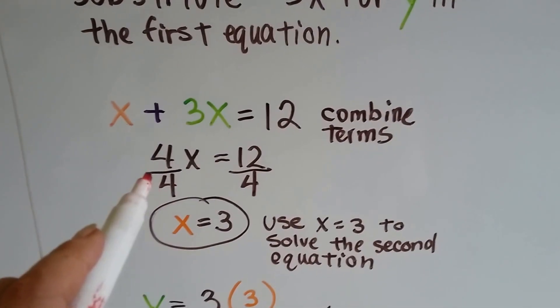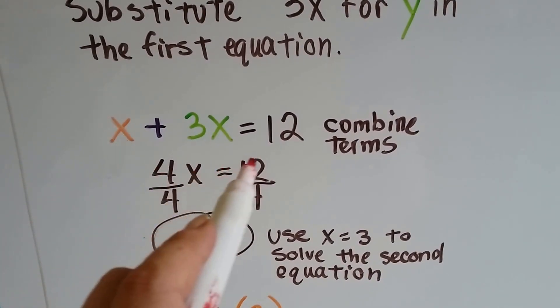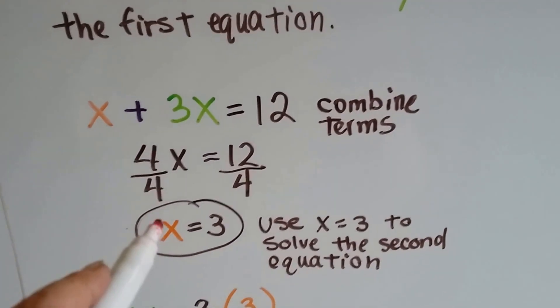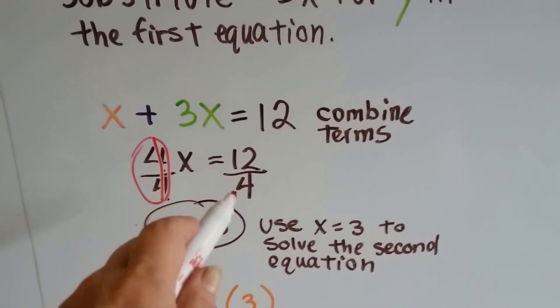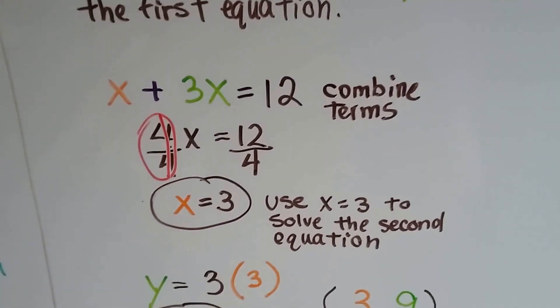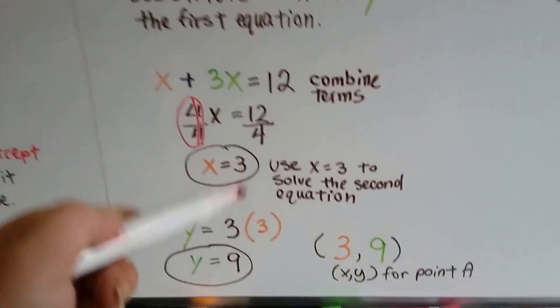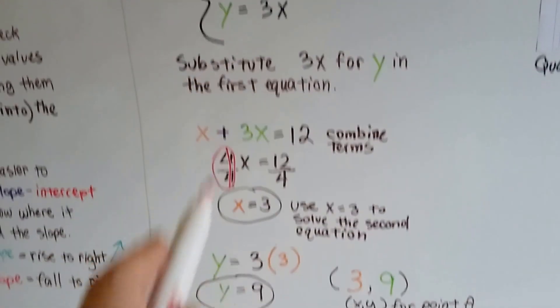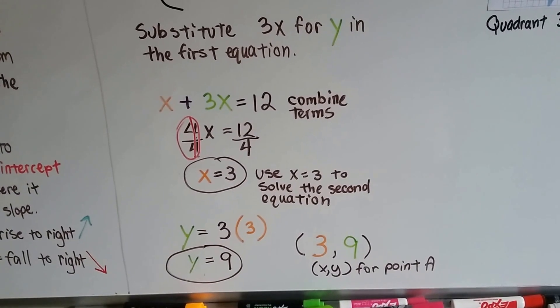Well, now we can combine the terms. We have x plus 3x is 4x. 4x equals 12 is what we get. We can divide both sides by the 4 and get our friend the invisible one. So, we have x equals 12 divided by 4 is 3. x equals 3. Now, we can use this x equals 3 to solve the second equation. It said y equals 3x. So, that means y equals 3 times 3. So, y equals 9. We've got our points. 3 comma 9.